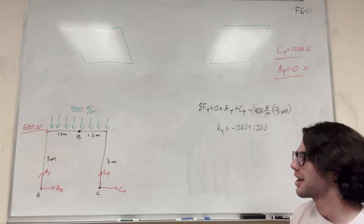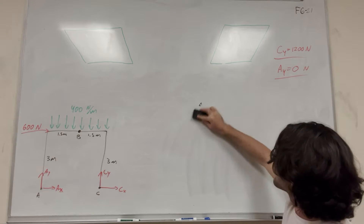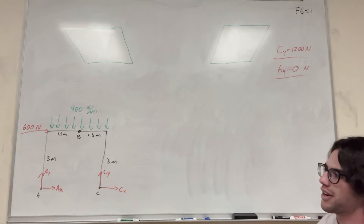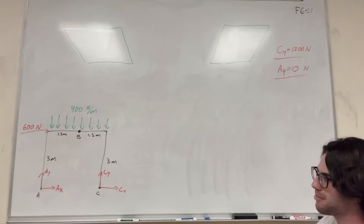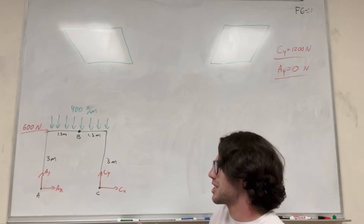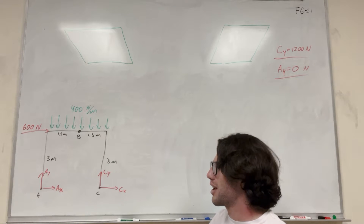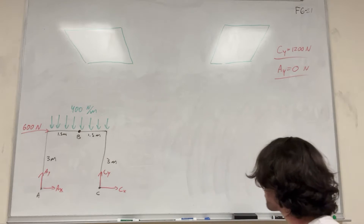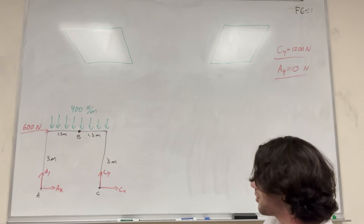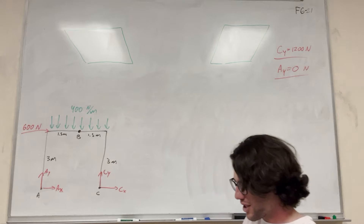We're halfway there — we found two of the four forces. Now let's find C of X and A of X. Unfortunately, no matter what we do with the full diagram, we're never going to be able to find A of X and C of X independently. We can't take the sum of forces in the X direction with two unknowns. So an easier way to do this is to split the beam and analyze just one side.